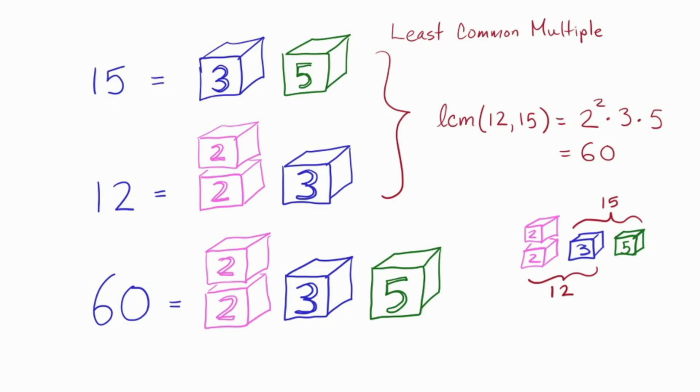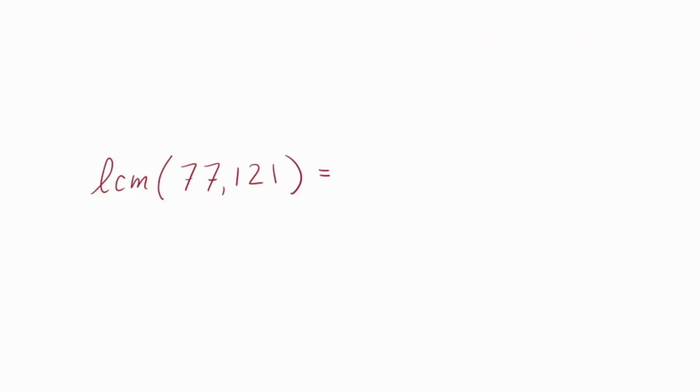So, the answer is 60. Okay. Pause the video here and compute the least common multiple of 77 and 121. Okay. I did this by factoring. 77 is 7 times 11 and 121 is 11 squared. So, the least common multiple has to have 1 seven and 2 elevens. So, it's 7 times 11 squared, which is 847.